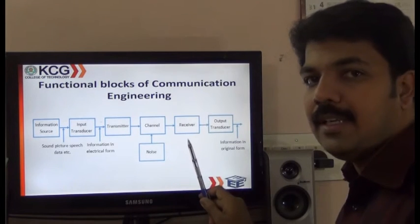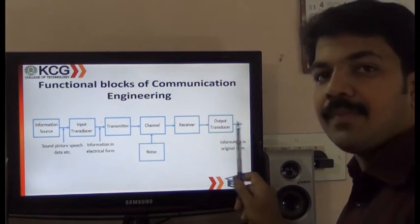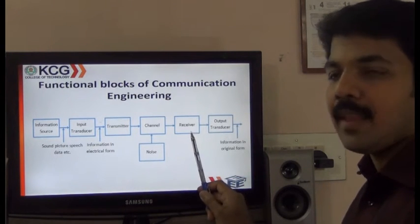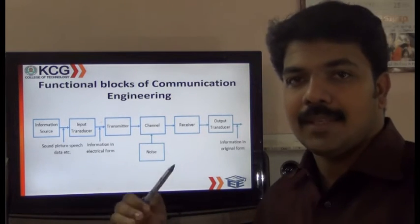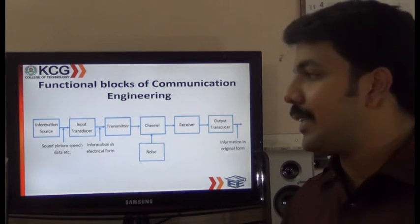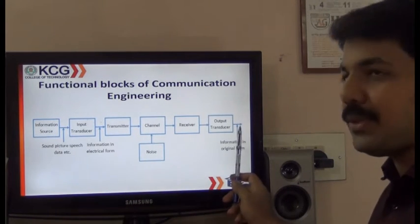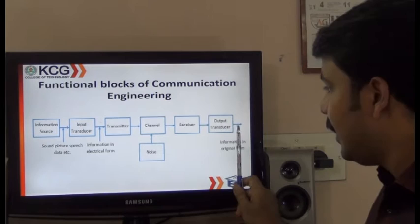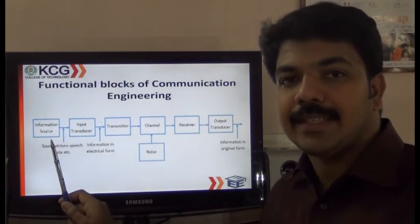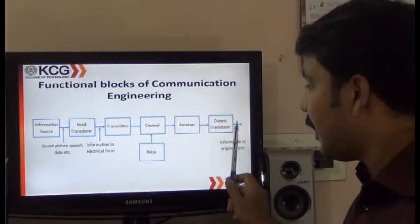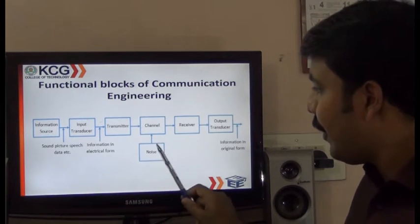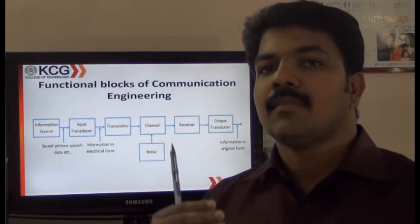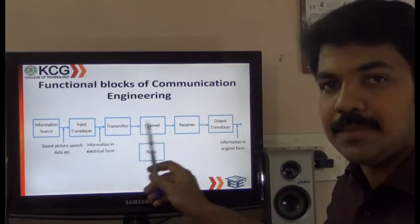At the receiving end, the receiver receives the data and extracts the original information. The signal will be amplified and then sent to the receiver by means of the output transducer, which converts the electrical signal into the respective output — image, audio, or document, depending on what was transmitted. We also have a noise block, which represents electromagnetic interference that occurs when transmitting data from the transmitter to the receiver.